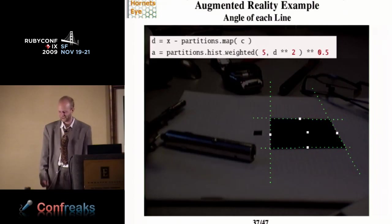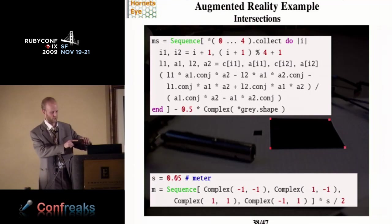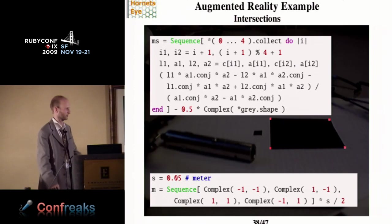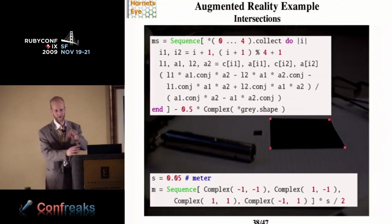And then finally, I compute the intersection of each two neighboring lines. I'm not going to explain how I did this. This was a bit difficult. But basically, then you will get the corner points of the rectangle. So now you see we have gotten very far already.